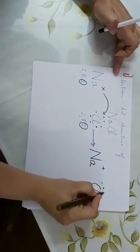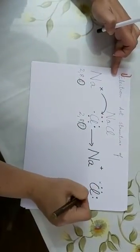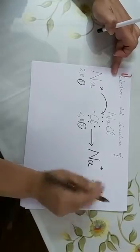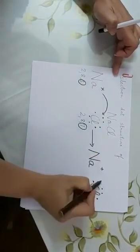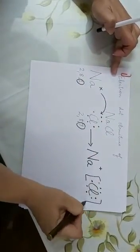But don't forget to draw these electrons, which is a very common mistake we do. So now one, two, three, four, five, six, seven. But since chlorine has accepted, so it becomes minus.